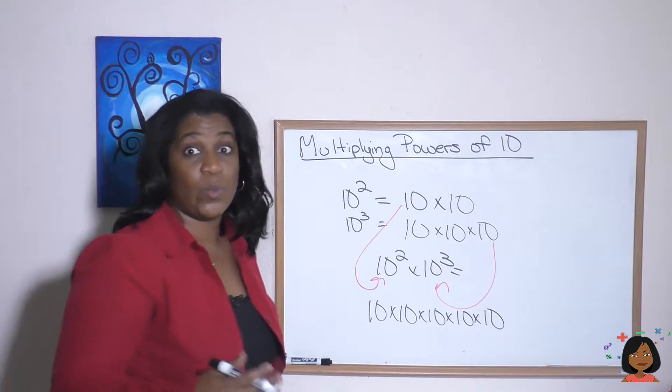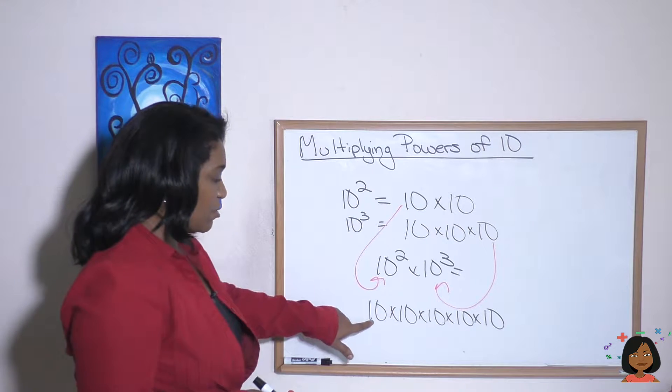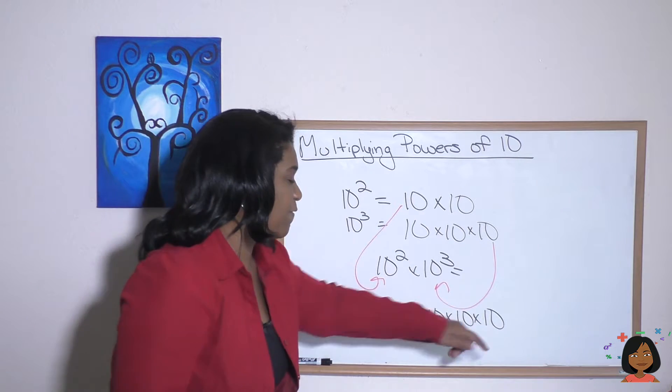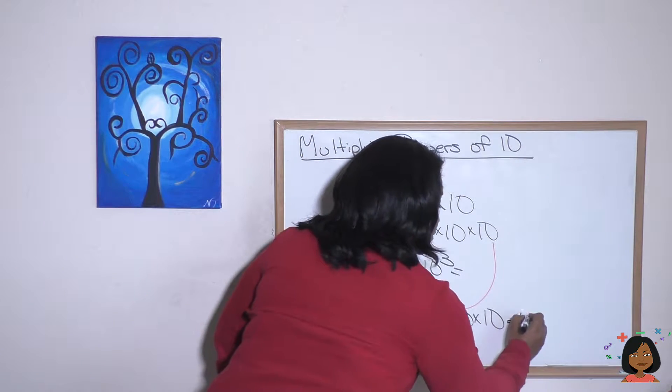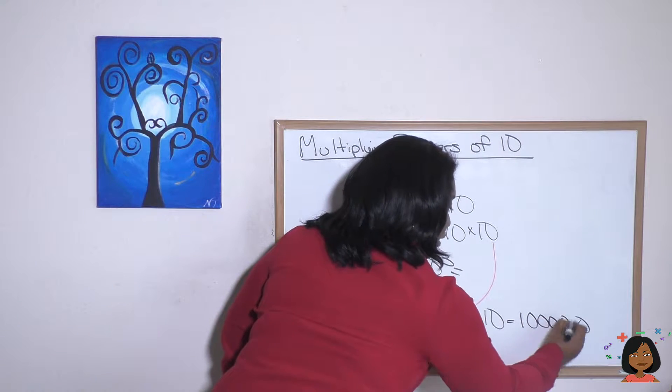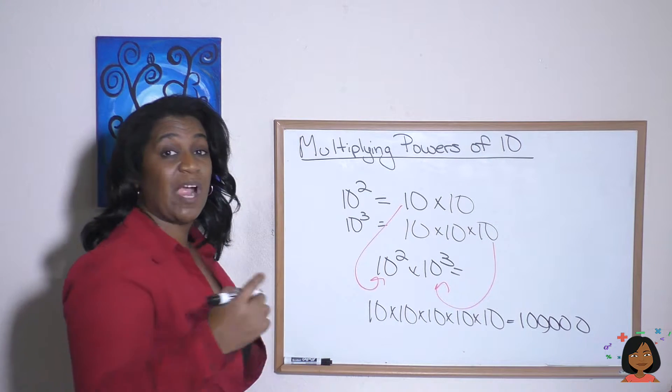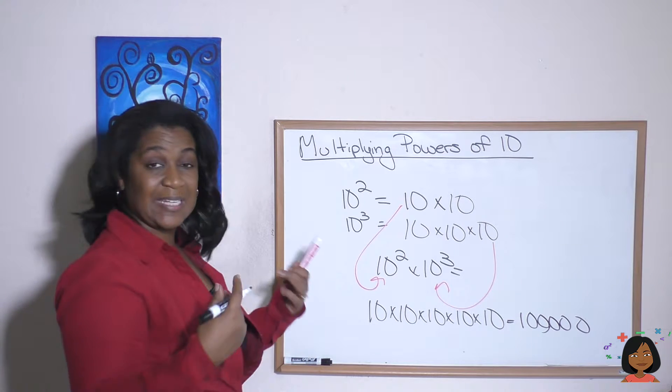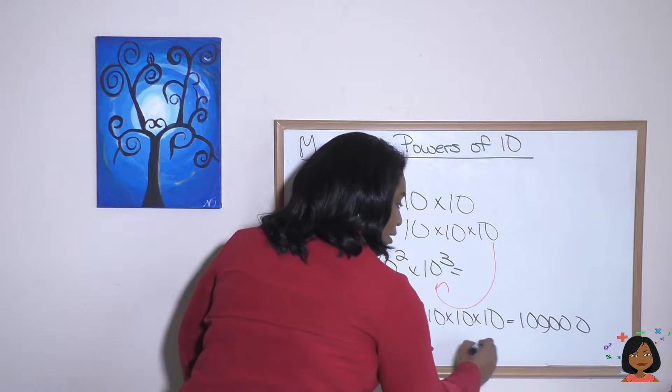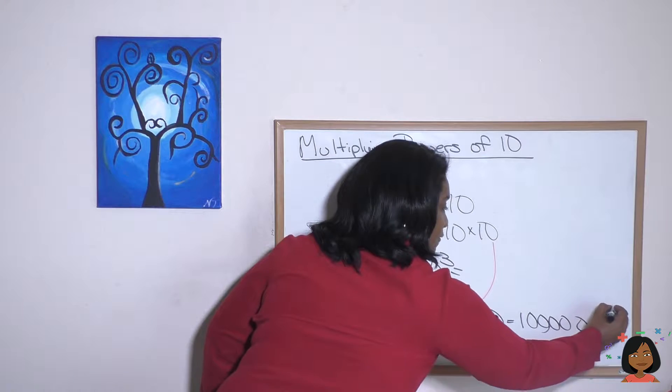Which means we know we just add up the number of zeros. One, two, three, four, five. 100,000 would be our answer. If I wanted to put that in exponent form, it would be, since there's five zeros, 10 to the fifth.